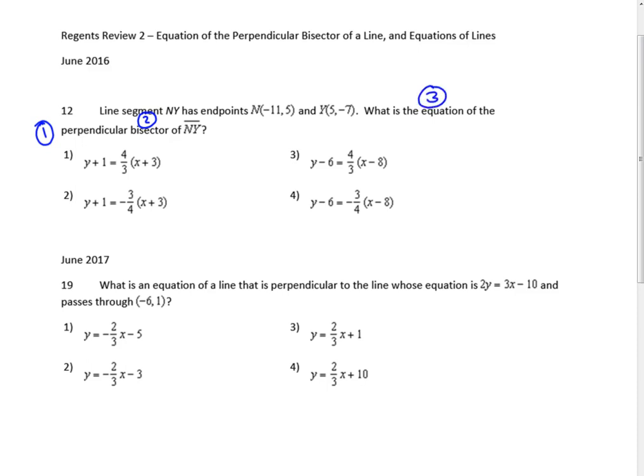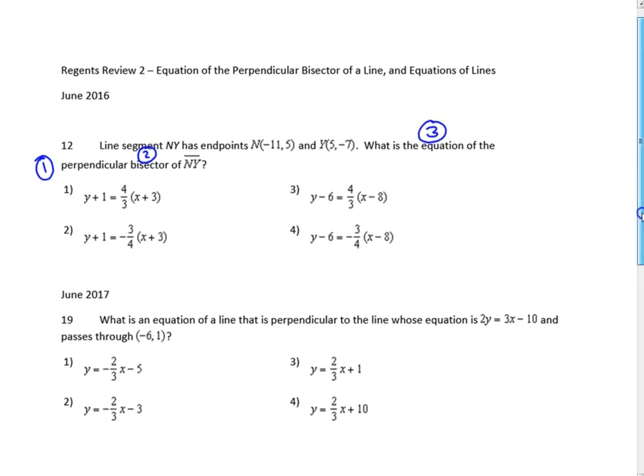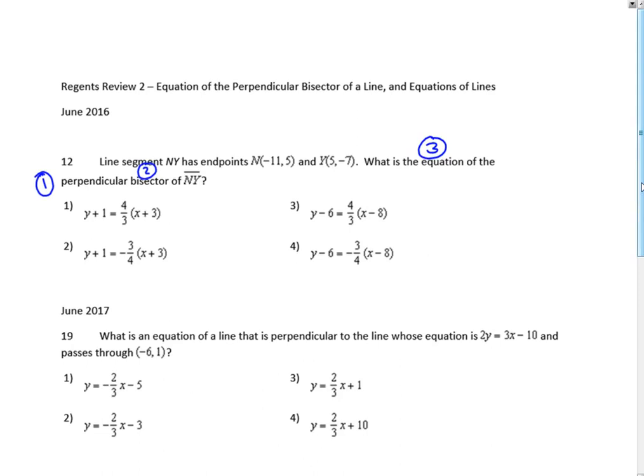1 is the slope, 2 is the midpoint, 3 is the point-slope form of the line. 1 is the slope, 2 is the midpoint, 3 is the point-slope form of the line. ABC, easy as 1, 2, 3, easy as do-re-mi. Write the equation of the perpendicular bisector of the line.